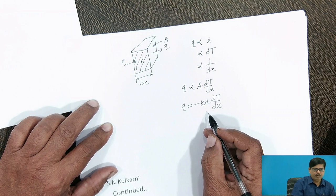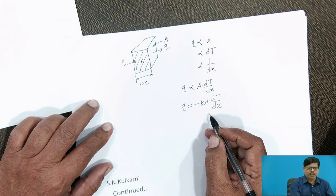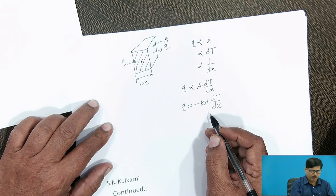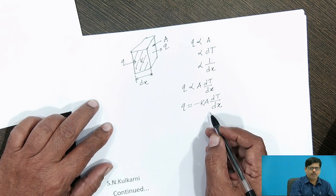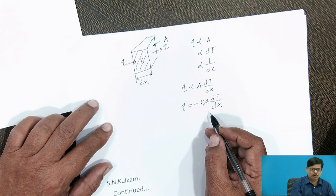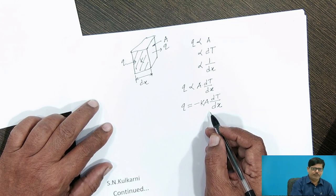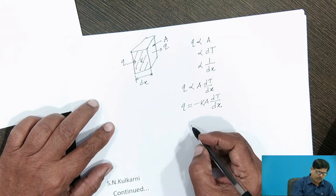In this equation, K is known as a constant of proportionality, which is also called as thermal conductivity of the material. When Fourier stated this law, he was not aware that it is a property of the material. He introduced it as a constant of proportionality, but later on it was found that K is the physical property of the material, which indicates the ability of the material to conduct heat.